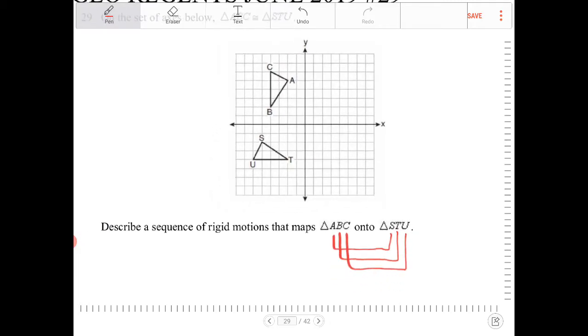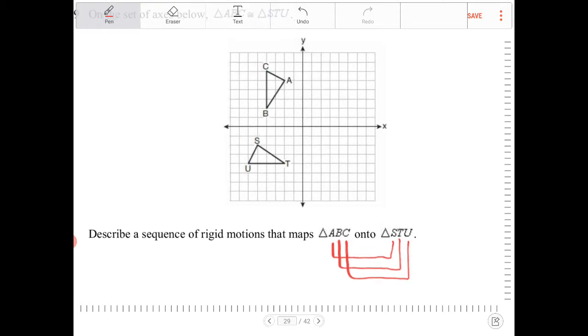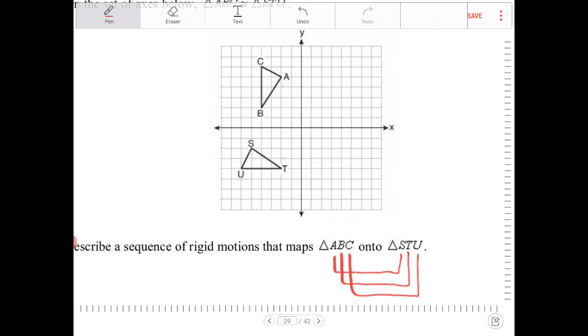So if that's the case, then there definitely has been a rotation that's taken place. Looking at this, going from A to S, that definitely looks like a 90 degree rotation.